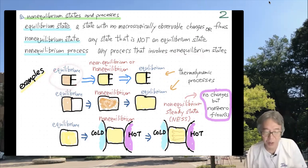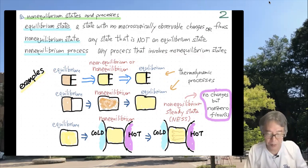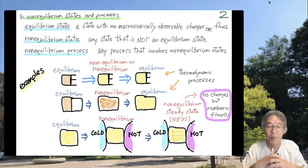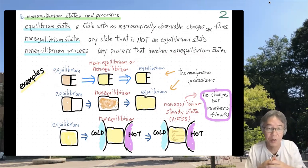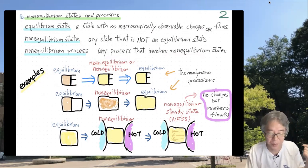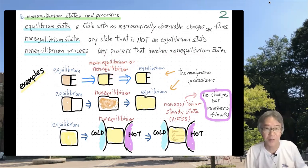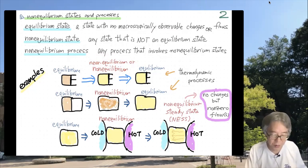Starting from an equilibrium state and moving a piston: if you move it very slowly, the state is near equilibrium. In the infinitesimally slow quasi-static limit, you have equilibrium throughout. But usually it is only near equilibrium. If you move it fast enough, it is simply non-equilibrium.